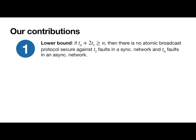We made three main contributions on this topic. The first is a lower bound showing that for any TA and TS such that TA plus 2 TS is greater than or equal to N, it's impossible to have an atomic broadcast protocol that is secure against TS faults in a synchronous network and also secure against TA faults in an asynchronous network.